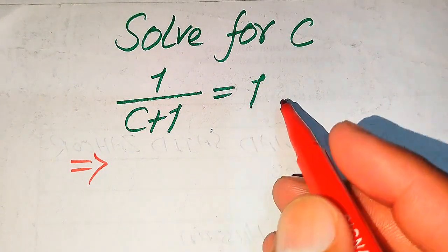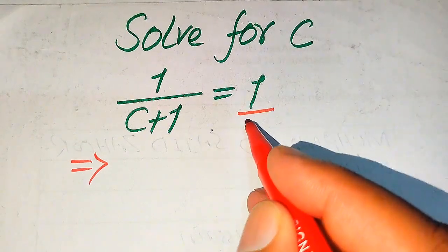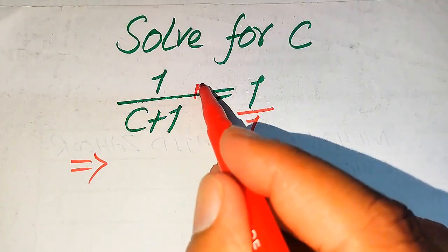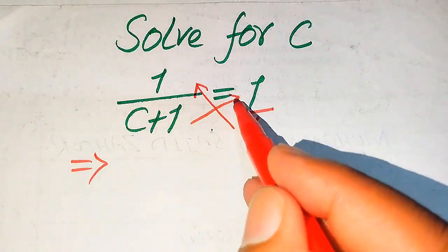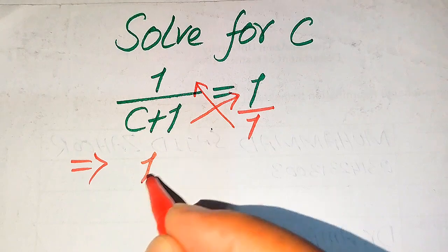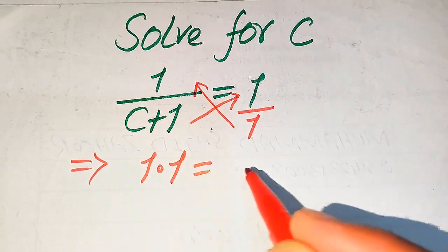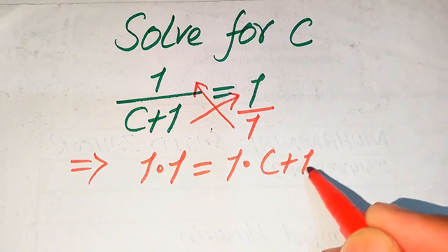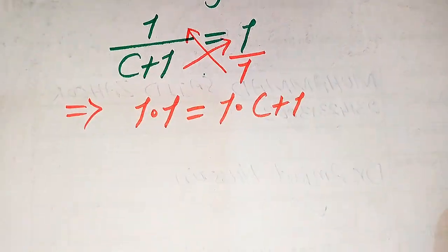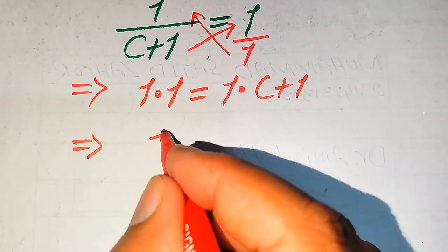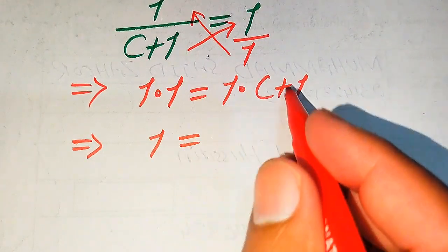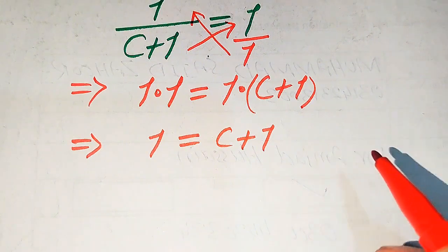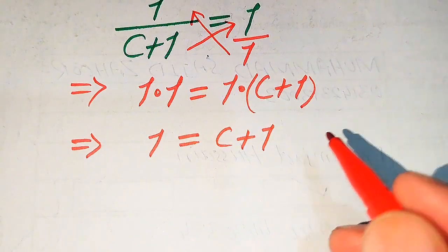Now we move towards the solution. First we focus on the right hand side — the denominator of this term is 1. We need to cross multiply the terms, so we multiply 1 with this one and we multiply c plus 1 with this one. After cross multiplication we get 1 times 1 equals to 1 times c plus 1.